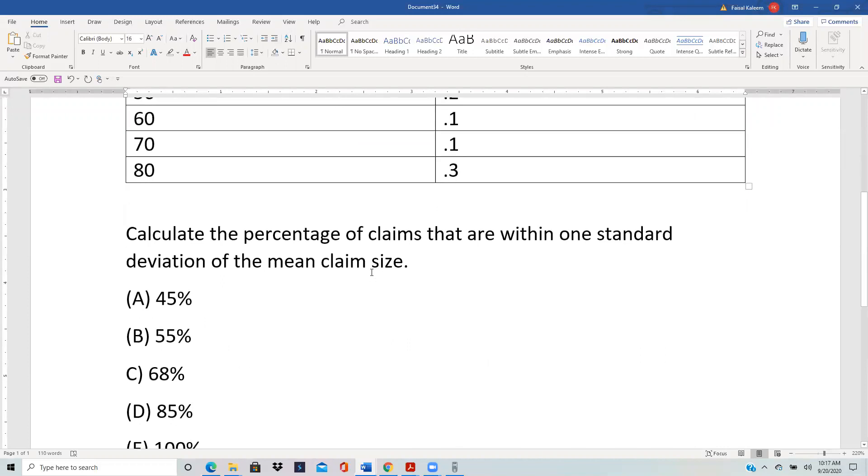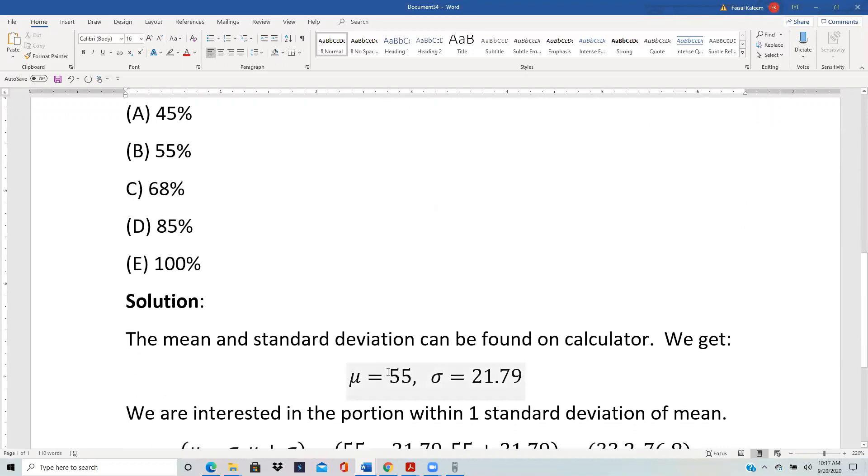So using that we end up having mean equals 55 and standard deviation 21.79.